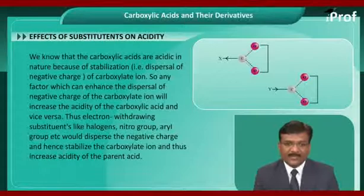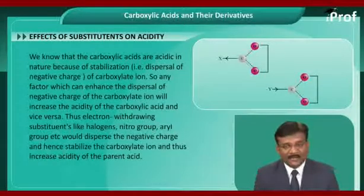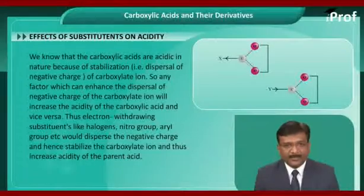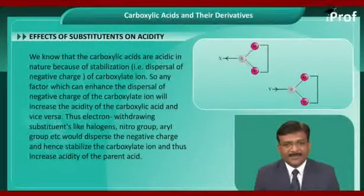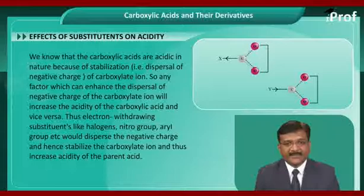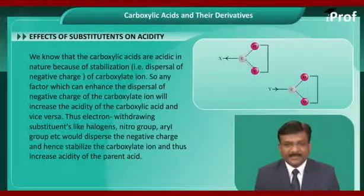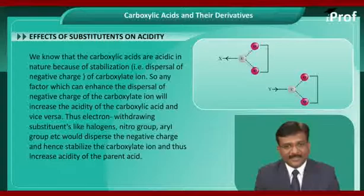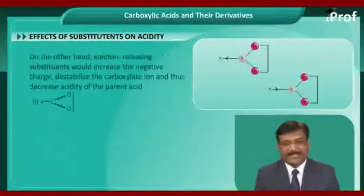Electron-withdrawing substituents like halogens, nitro group, aryl group, etc., would disperse the negative charge and hence stabilize the carboxylate ion, thus increasing the acidity of the parent acid.